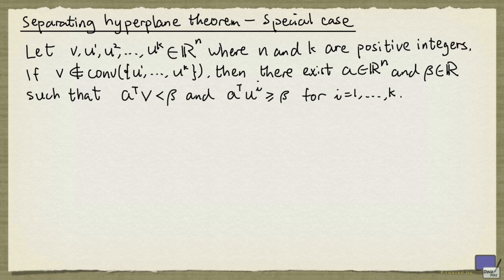If v is not in the convex hull of u1 up to uk, then there exists a, an element of R^n, and a real number beta such that a transpose v is less than beta, and a transpose ui is at least beta for all i from 1 up to k.